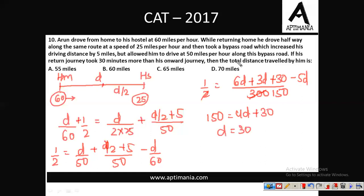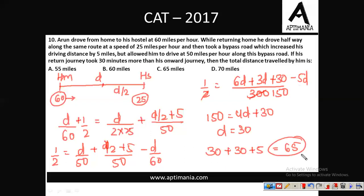The question asks for the total distance travelled. While going from home to hostel he travelled 30 miles. While returning he travelled 30 miles plus 5 miles extra via the bypass. So a total of 65 miles was travelled by Arun during the entire journey. The correct answer for question number 10 is option C, 65 miles.